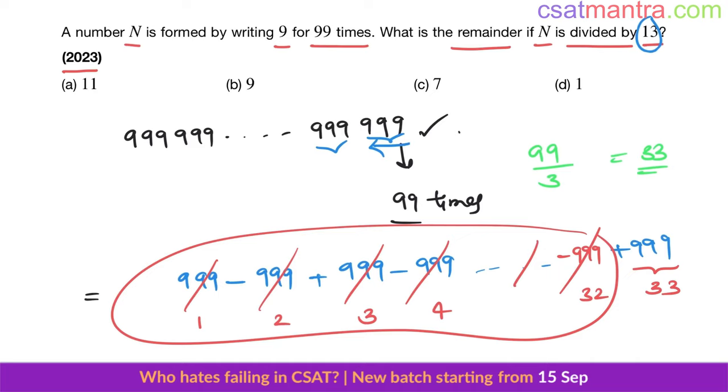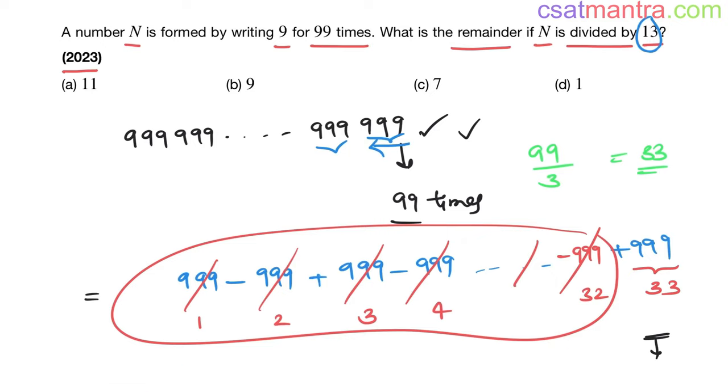Whatever remainder you get here for this resultant, that would be the remainder of this number when divided by 13. Here we are left with triple nine. You are dividing this with 13 and checking what is the remainder.